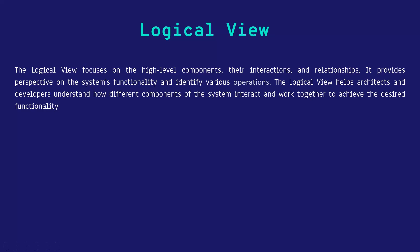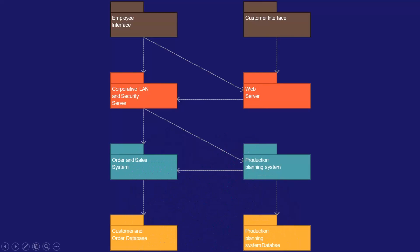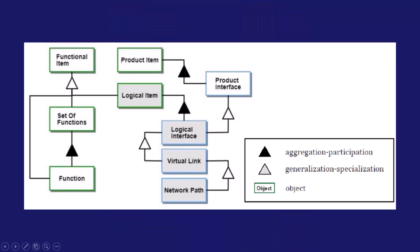It's about functionality — it shows you high-level components, their relations and interactions, and helps architects and developers understand how the system is going to achieve the functionality. For example, the web server, the employee interface, the customer interface — all these work together to show the relation and interaction. Another example: functional items, product items, production items and logical items all connect together to show how they are related to deliver the functionality. This is the logical view.